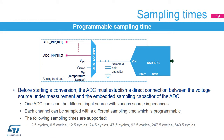The first step of a conversion consists in loading the sample and hold capacitor with the voltage to be measured. Longer sample times ensure that signals with higher impedance are correctly converted. The sampling time can be programmed individually for each input channel of the analog-to-digital converters.